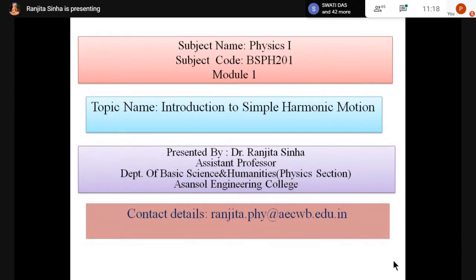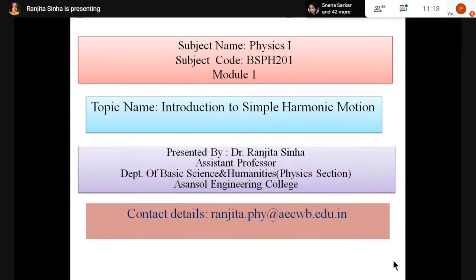Starting from simple harmonic motion, it is included in mechanics. Your subject name is Physics 1, subject code BSPH101. For your semester it will be BSPH101, included in your Module 1. My name is Dr. Ronjita Sinha. I am assistant professor in the Department of Basic Science and Humanities, Physics section, at Essential Engineering College.